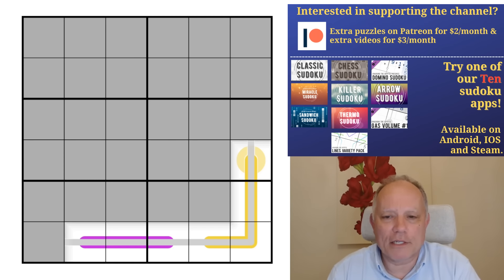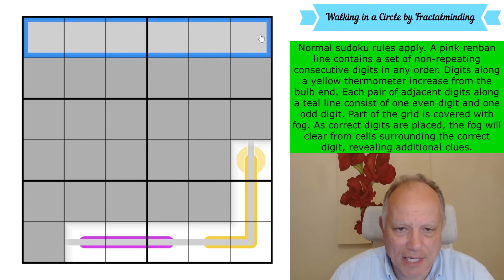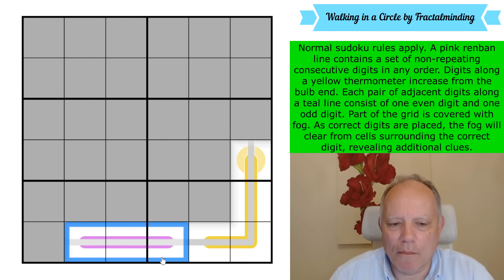The first link under the video is to this puzzle, Walking in a Circle by fractal minding, whose name I am not familiar with. I'm going to do the rules now. We've got a 6x6 Sudoku, so the normal Sudoku rules that apply are putting one to six in every row, every column, and every 2x3 box. It says a pink Renban line - I might call this color purple, but let's not argue the toss about that.